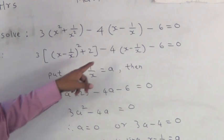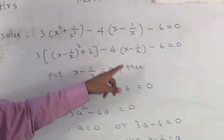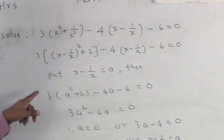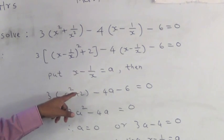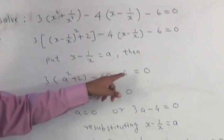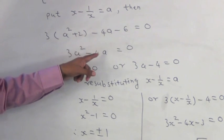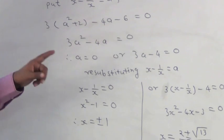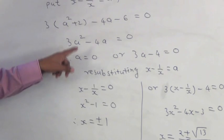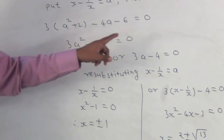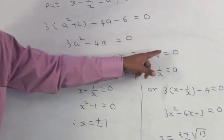Put x minus 1 upon x is equal to A. Then, the above equation becomes 3 in bracket A square plus 2 minus 4A minus 6 is equal to 0. Simplifying this we get 3A square minus 4A is equal to 0. Therefore, values of A are A is equal to 0 or 3A minus 4 is equal to 0.